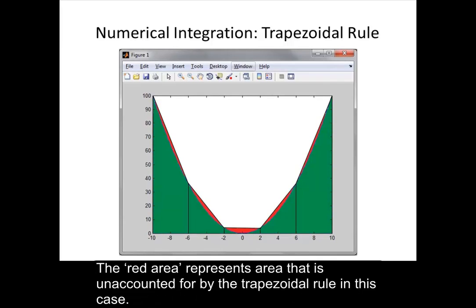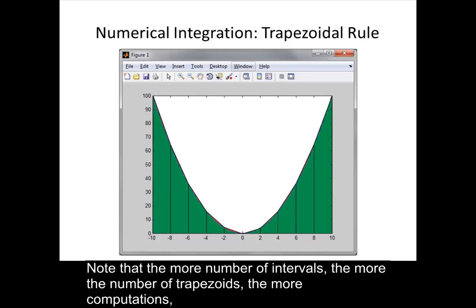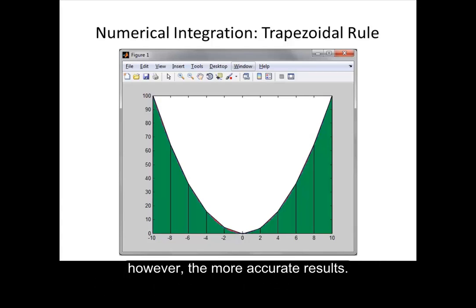The red area represents area that is unaccounted for by the trapezoidal rule in this case. Note that the more intervals, the more trapezoids, the more computations. However, the more accurate the results.